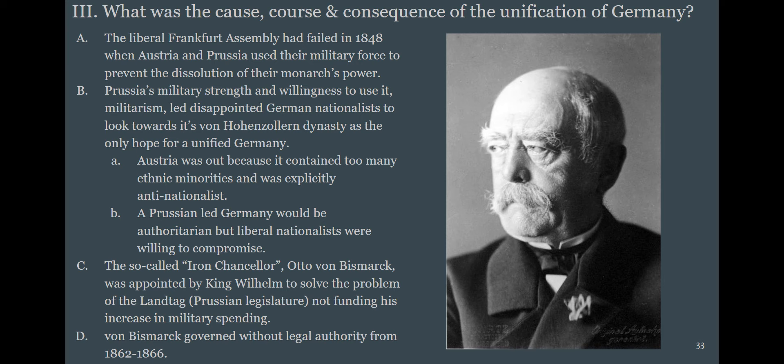German nationalists who saw the failure of liberal democracy thought maybe a strong hand could unify Germany. They knew Austria wouldn't do it because it contained too many ethnic minorities and was explicitly anti-nationalist. They figured they'd get an authoritarian Germany and liberalize it over time — and they were right, it just took the Second World War to make that happen.